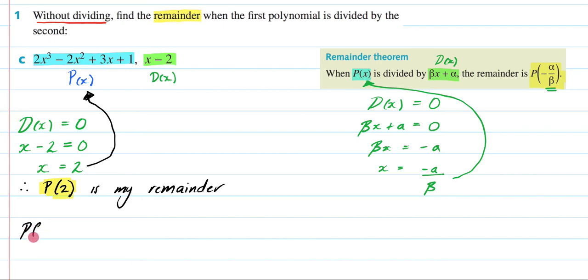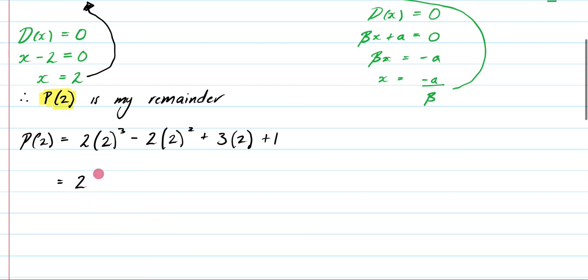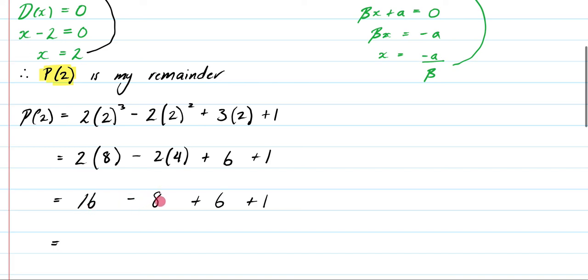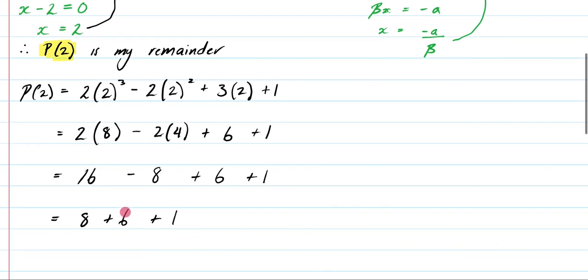So let's now finish off this question. So what we're going to do is we're going to say, P of 2 is going to be, so every time I see an x, I'm going to put a 2 there. So it's going to be 2 times 2 cubed minus 2 times 2 squared plus 3 times 2 plus 1. We come down. This is going to be 2 times 8, minus 2 times 4, plus 6, plus 1, which is going to be equal to 16 minus 8, plus 6, plus 1. Keep on going. This is going to be equal to 16 minus 8 is going to be 8, plus 6, plus 1. I think I'm going to answer it here. 8 plus 6 is going to be 14, plus 1 is going to be 15.